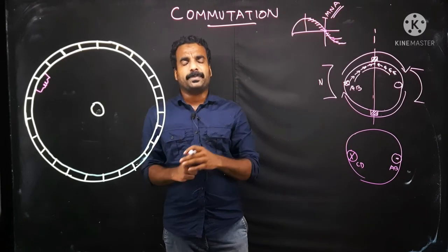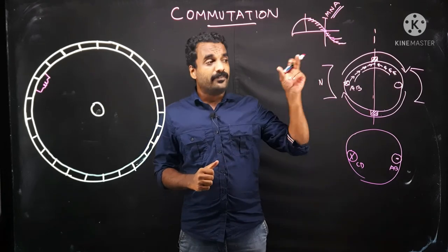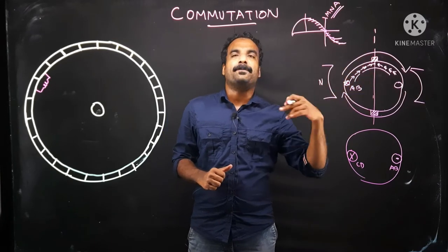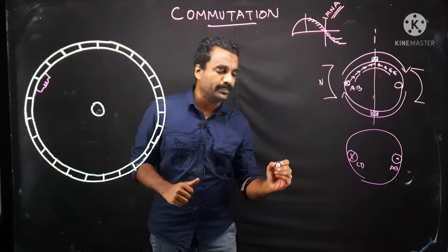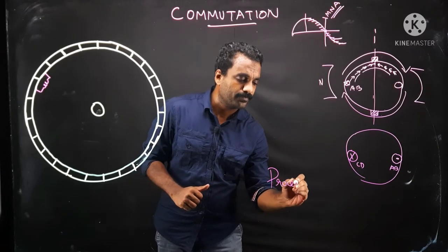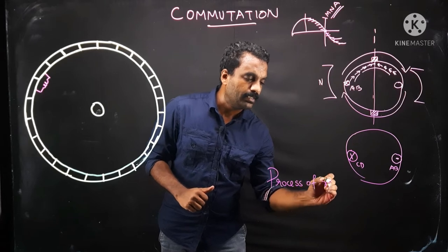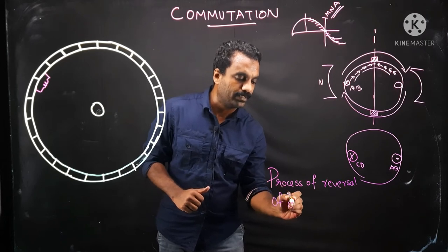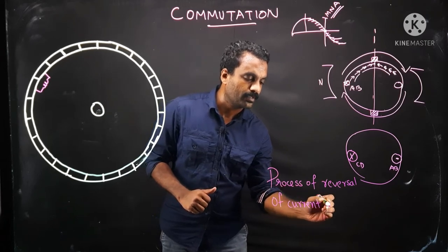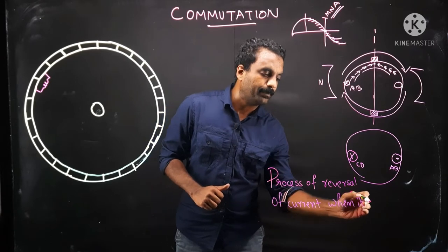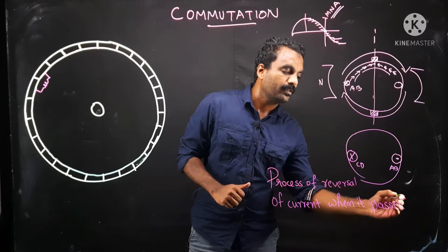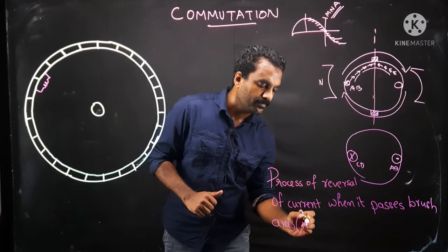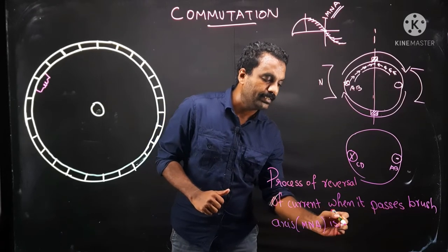Commutation can be defined as the process of reversal of current in a coil when it passes the brush axis — or magnetically neutral axis (MNA). That process of current reversal when the coil passes the brush axis or MNA is called commutation.